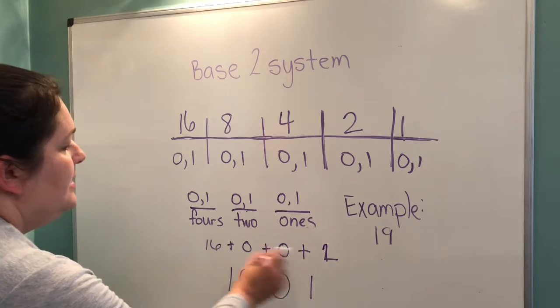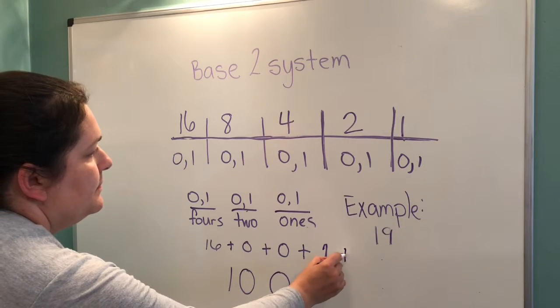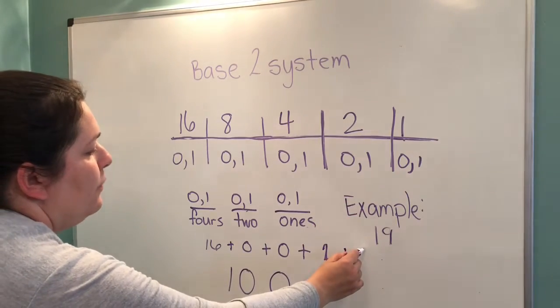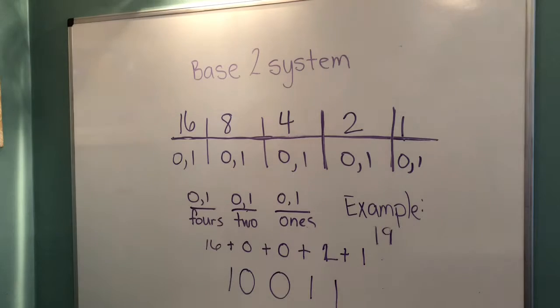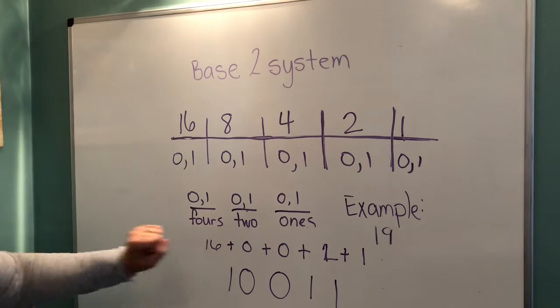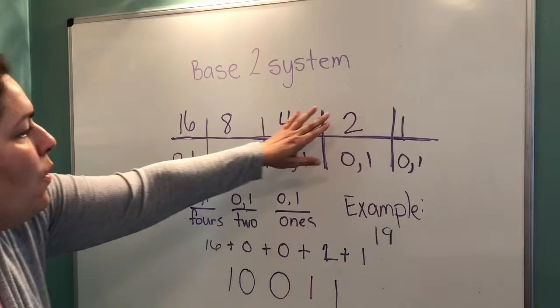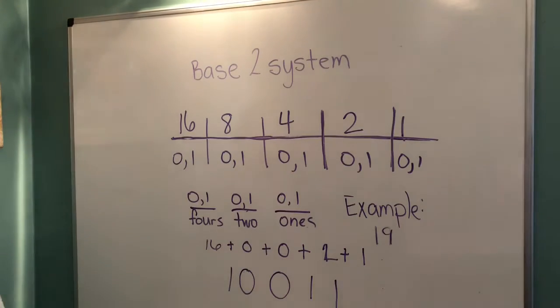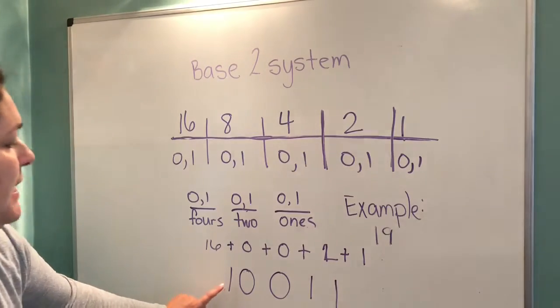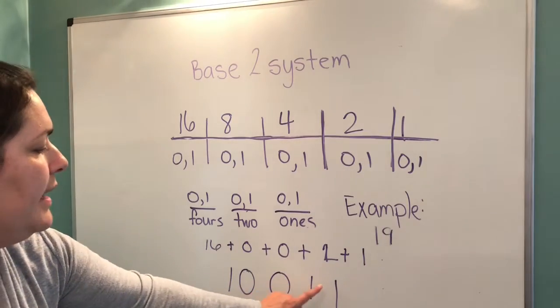And we would get 18. And then, we add 1, 1, which would give us 19. So, we have 1 in the 16s place. No 8s. No 4s. 1 of the 2s. And 1, 1. So, in the base 2 system, our number 19 would be 1, 0, 0, 1, 1.